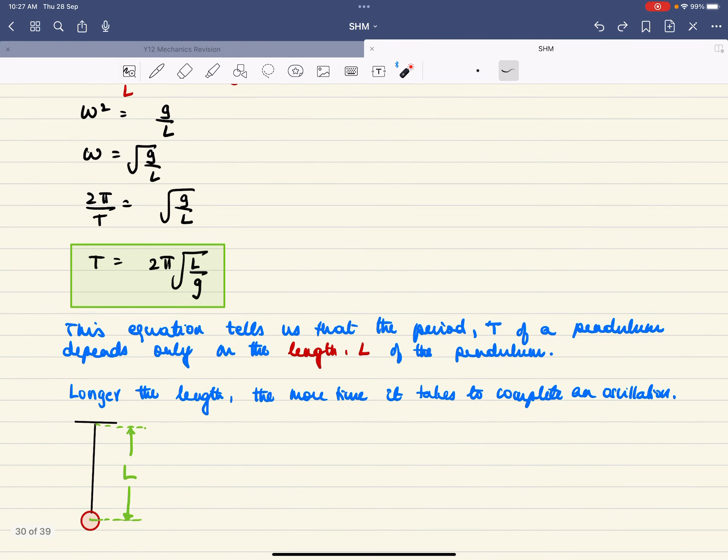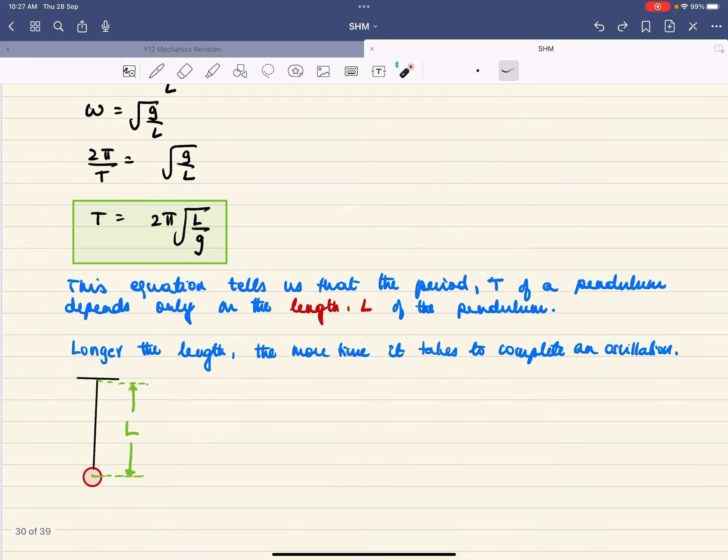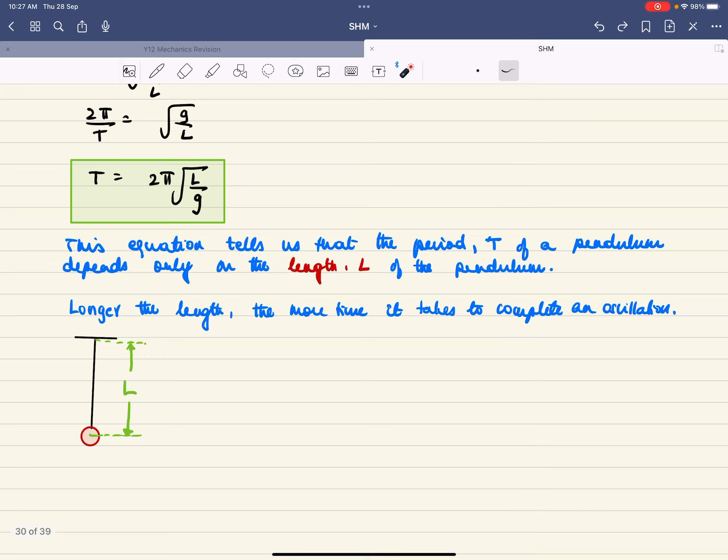This equation tells us that the period t of a pendulum depends only on the length of the pendulum. The longer the length, the more time it takes to complete an oscillation. The length of the pendulum is actually from the point of suspension to the center of mass of the bob. It's not till the bottom, it's not till the top, it's the center of mass.